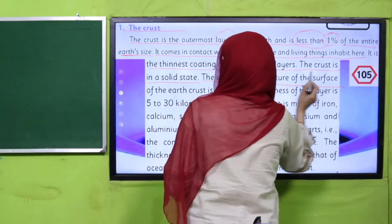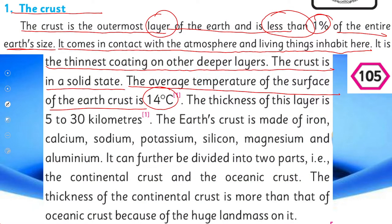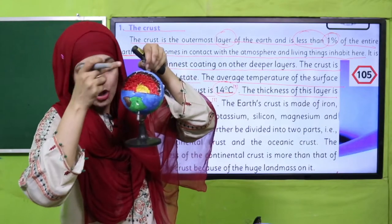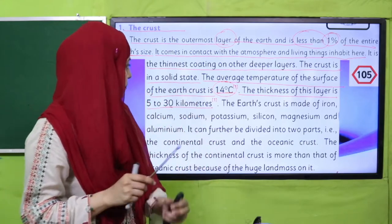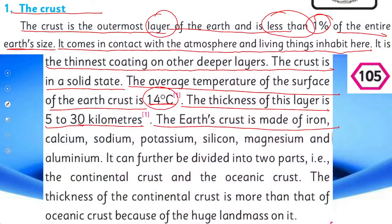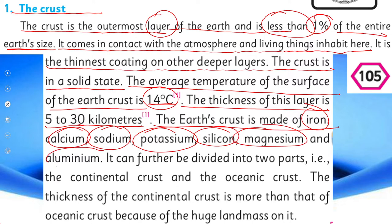The average temperature of the surface of the earth's crust is 14 degrees centigrade. The thickness of this layer is 5 to 30 kilometers. The earth's crust is made of iron, calcium, sodium, potassium, silicon, magnesium, and aluminum. Aur silicon and oxygen are present in maximum quantity. Ye in tamam madaniyaat se milkar bani hai.